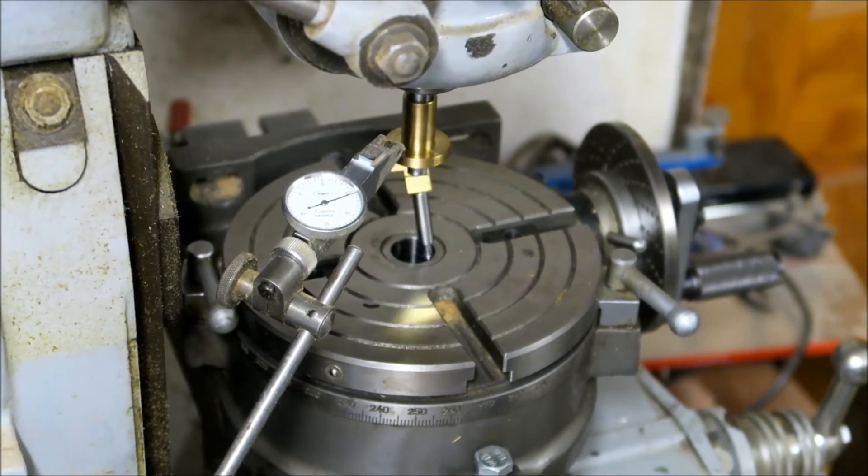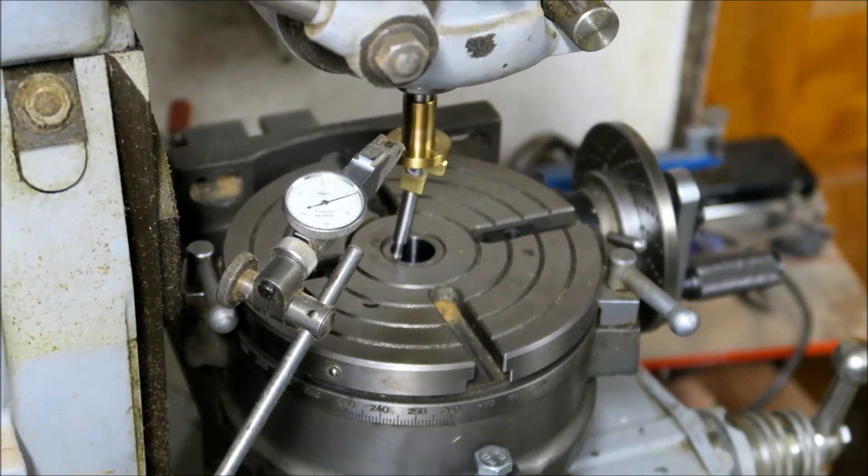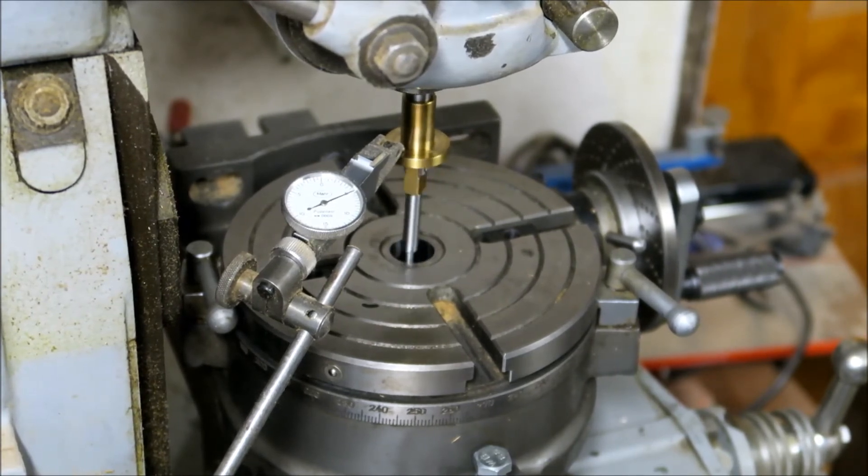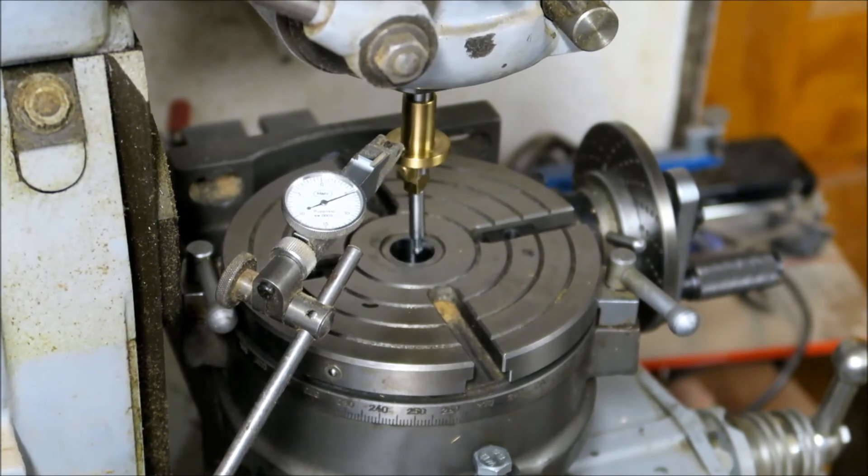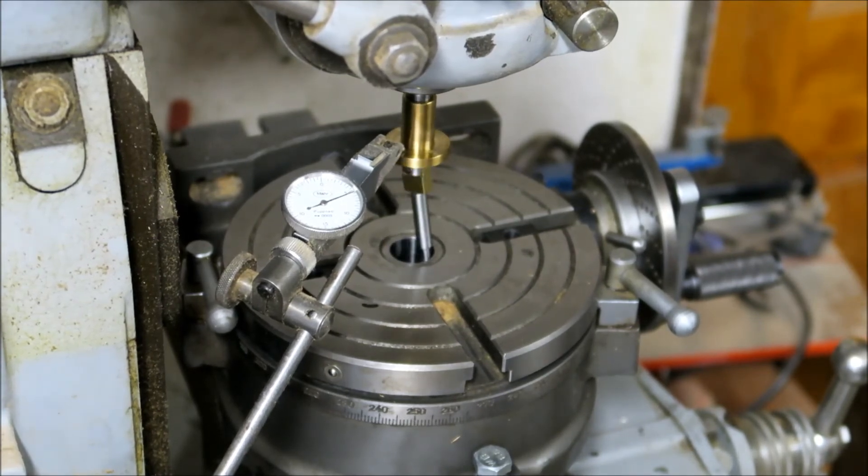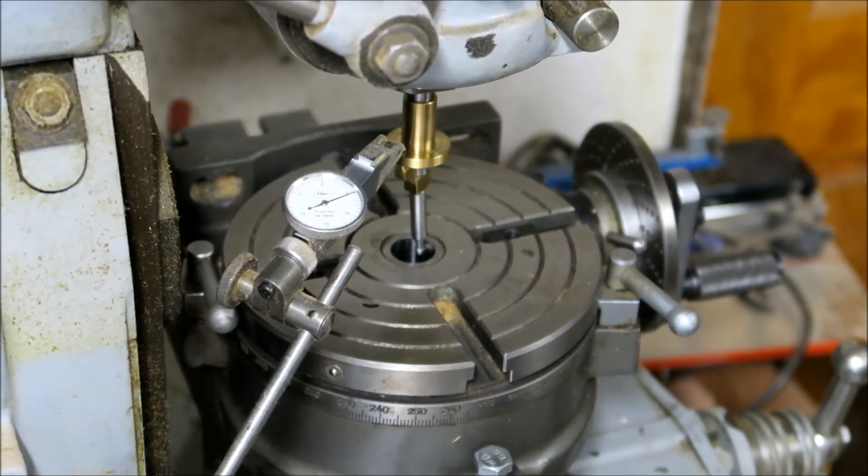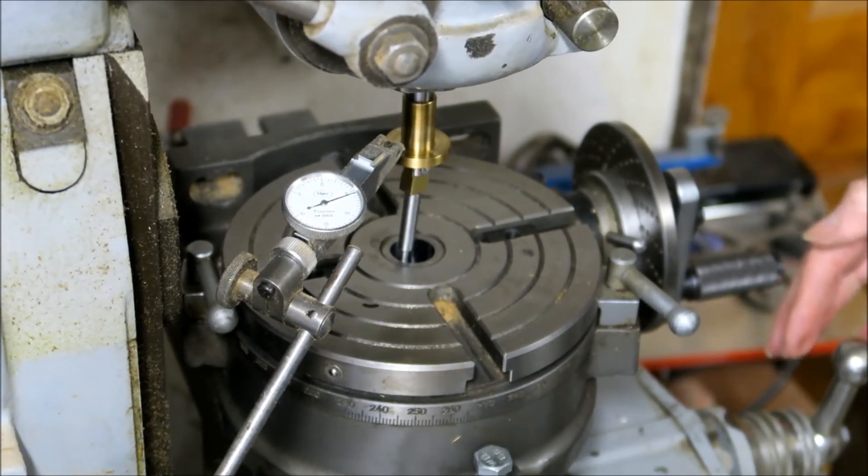Again anti-clockwise then clockwise on the hand wheel. There you go, that's less than a thou now. So then I know in the clockwise direction I can zero the two dials.